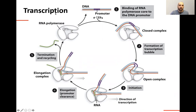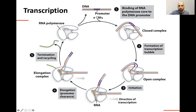The idea here is that the DNA is going to be turned into — or used as a template to make RNA. We've got a sequence that we want to turn into RNA. There's a promoter, and then there are transcription factors — either basal transcription factors in eukaryotes or sigma factors in bacteria — that will bind to that DNA.